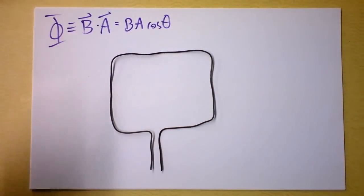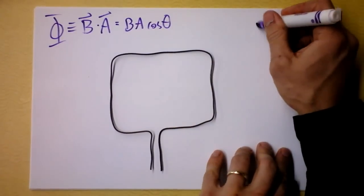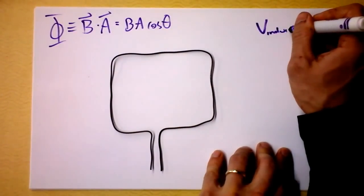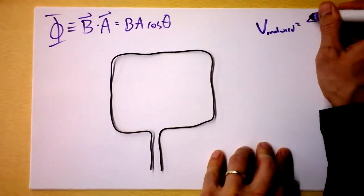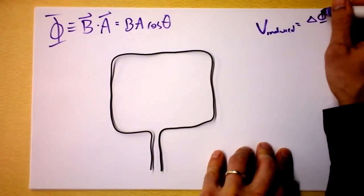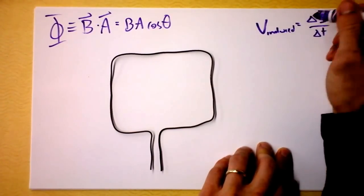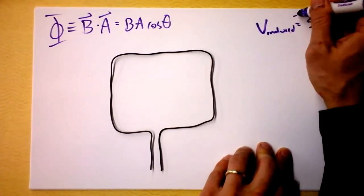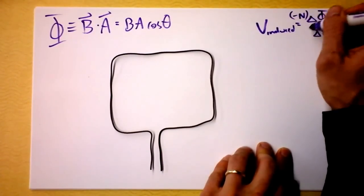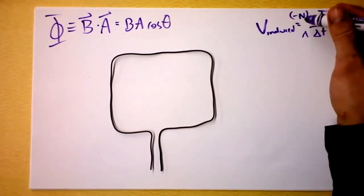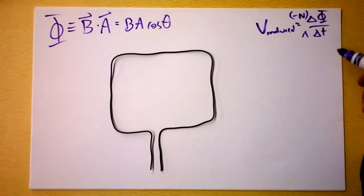You also know that if there is a change in flux in some amount of time, then you're going to get an induced voltage. There also has to be negative n multiplied in there. Let's see if we can slip that in there: negative n times d phi dt. It should be a derivative really.